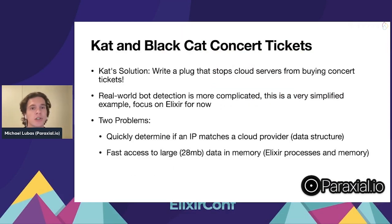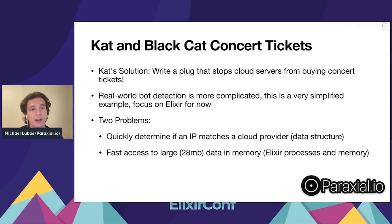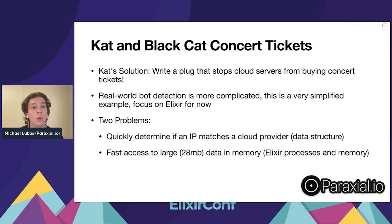Cat comes up with a solution: she wants to write a plug that will stop these cloud servers from buying concert tickets. This is a simplified example — real-world bot detection is very complicated — but I'm doing this to demonstrate problem solving in Elixir. There are two problems Cat needs to approach. The first is how do you quickly determine if an incoming IP address in your Phoenix connection matches a cloud provider's IP prefix range?